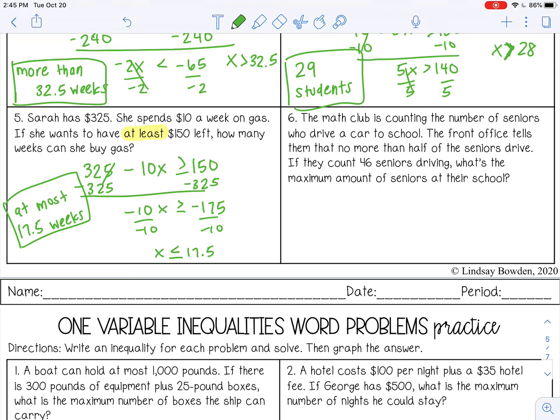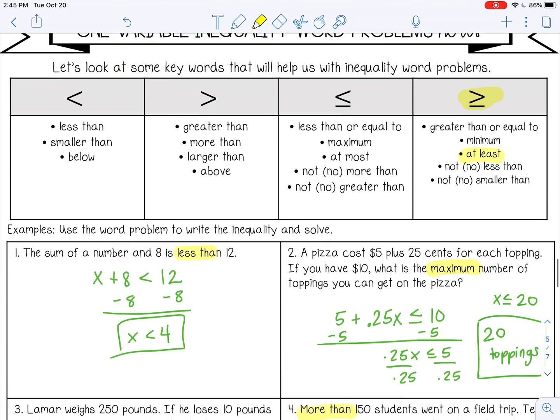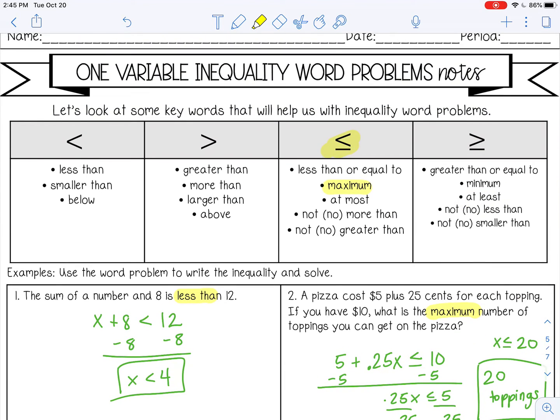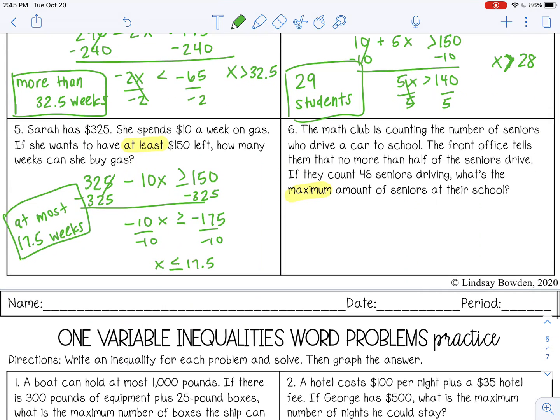Number six. The math class is counting the number of seniors who drive a car to school. The front office tells them that no more than half of the seniors drive. If they count 46 seniors driving, what is the maximum amount of seniors at their school? So what's the maximum amount? That's going to be here. So this is less than or equal to. Now this one is a little bit tricky. If they count 46 seniors driving, what's the maximum amount of seniors at their school? We know that no more than half of the seniors drive. So half of the seniors drive. And that has to be less than or equal to 46 because they count 46 seniors driving.